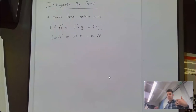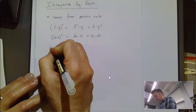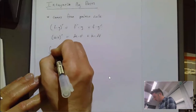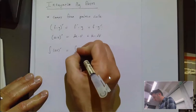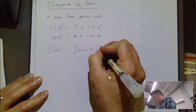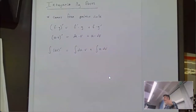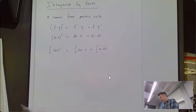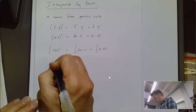Now we're going to integrate both sides. The integral of the derivative of u times v is going to equal the integral of du times v plus the integral of u times dv. When you take the integral of the derivative, you're just undoing that. So the integral of the derivative of u times v is just u times v.